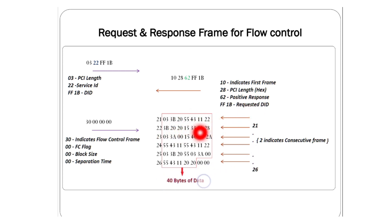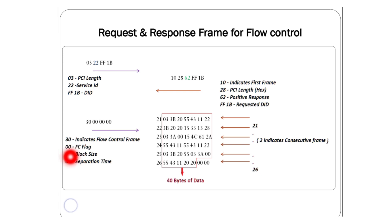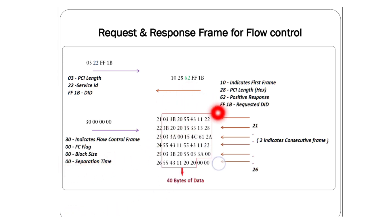CANTP supports up to 4095 bytes of data, and all that data is sent in this manner. Additionally, the flow control flag values 01 (wait) and 02 (abort) were briefly mentioned. Block size — the number of blocks — and separation time between frames are also configurable inputs in the flow control frame.